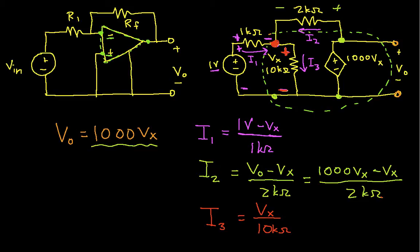Now I can apply Kirchhoff's current law to say that the sum of the currents going in is equal to the current leaving. Before I do that, though, let me take this expression and simplify it one step further. I can write this as 999 Vx over 2k ohms. That will make things easier.